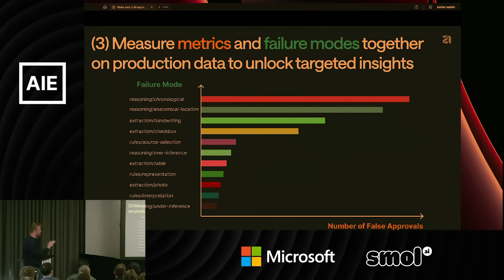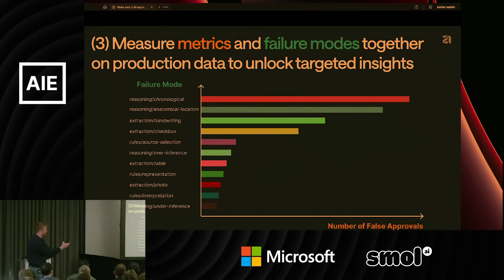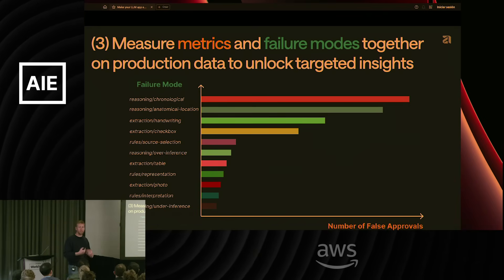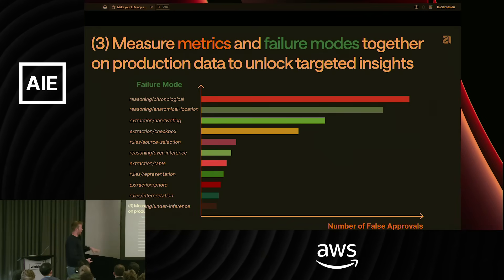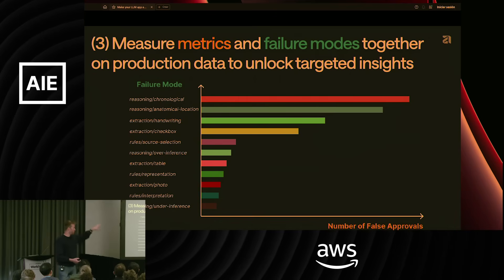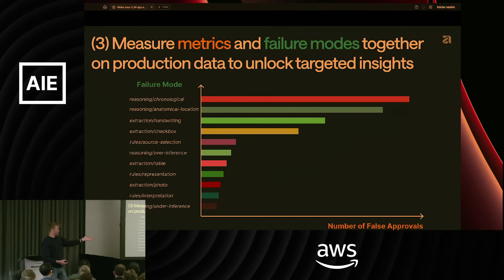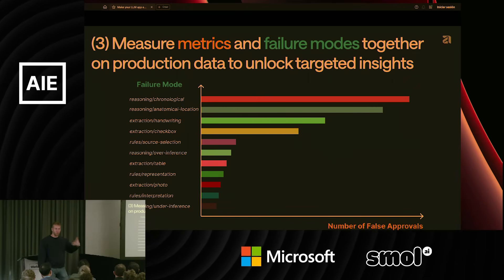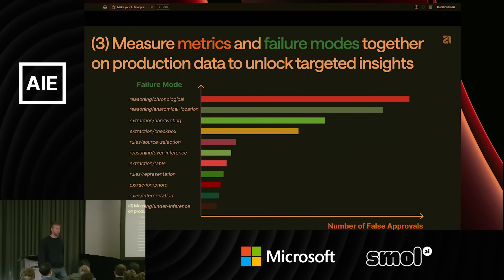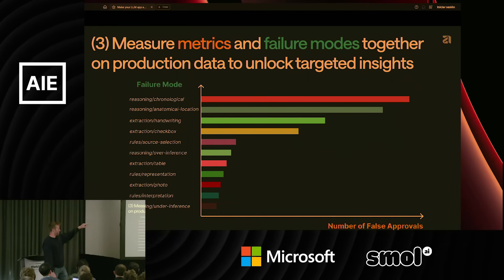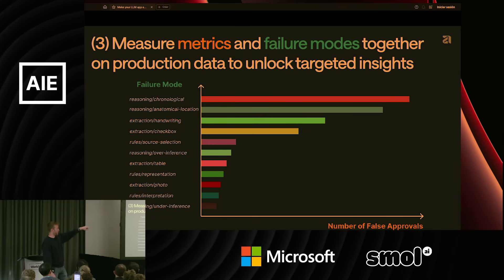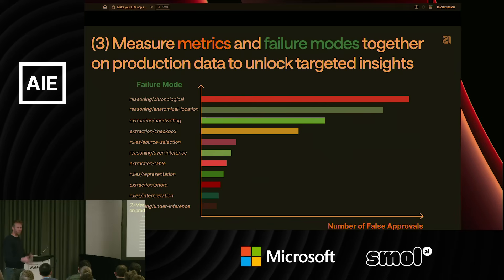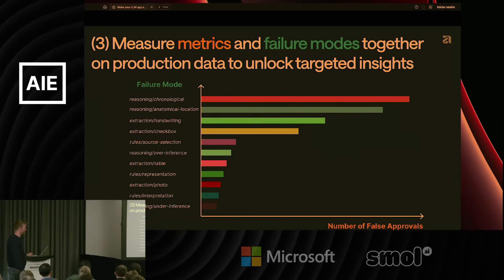Doing both at the same time enables you to understand things like this: on the x-axis, number of false approvals — the metric we care about; on the y-axis, the different failure modes. That tells you that if you want to minimize false approvals and optimize for this north-star metric, these are the failure modes to address first, in order. As a PM, that's a useful piece of information for prioritizing the work you want to do.